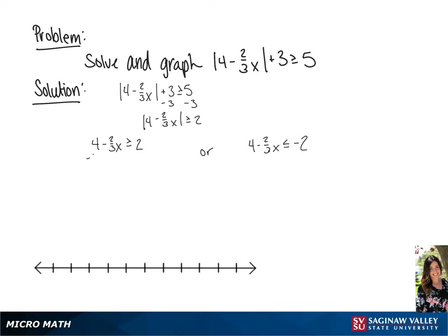We're going to start with the first inequality and subtract 4 from each side. This will give us negative 2 thirds x is greater than or equal to negative 2. Next, we're going to divide both sides of the inequality by negative 2 thirds. Since we are dividing by a negative number, we're going to flip the sign. This will give us our first solution of x is less than or equal to 3.